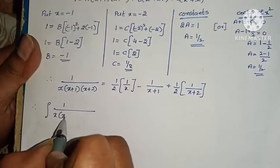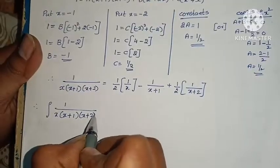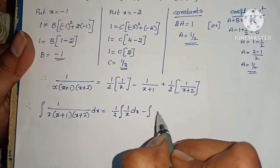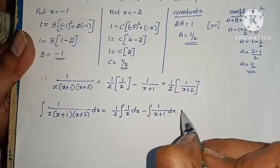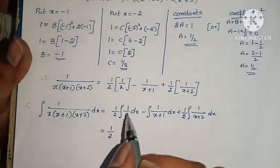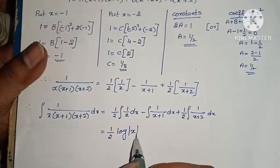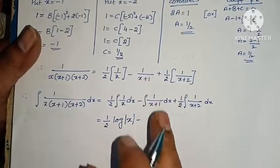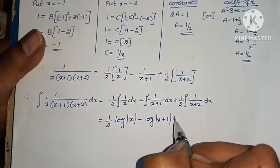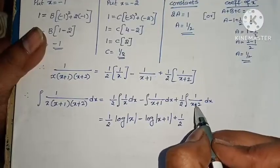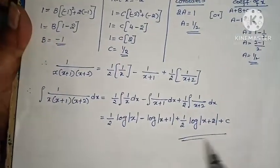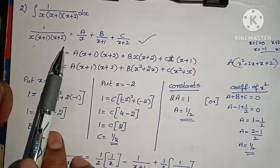Therefore, integral of 1 by [x(x+1)(x+2)] dx equals integral (1/2)(1/x) dx minus integral 1/(x+1) dx plus (1/2) integral 1/(x+2) dx. Using the log formula: answer is (1/2) log mod x minus log mod(x plus 1) plus (1/2) log mod(x plus 2) plus C. Problem complete. Steps: factor, find A B C by LCM, substitute, integrate.